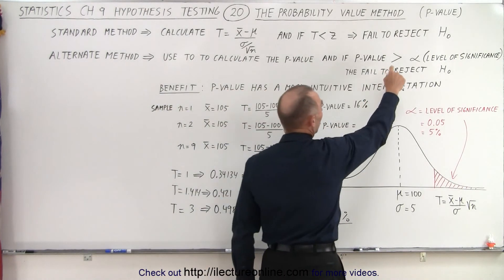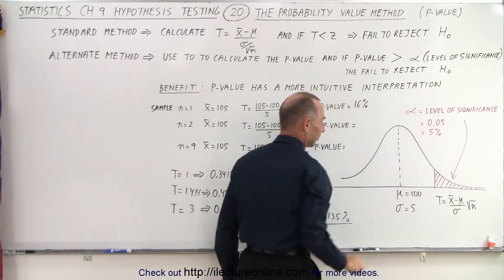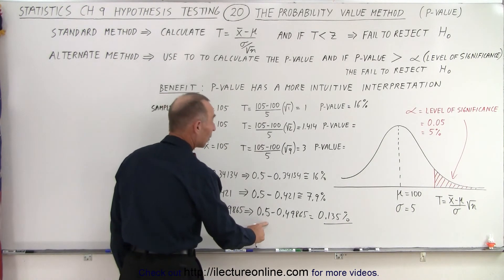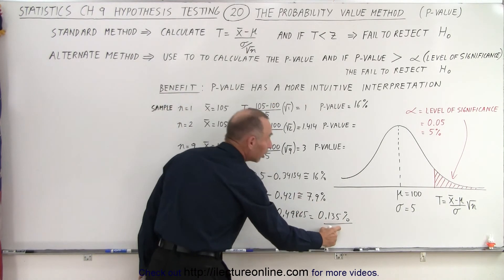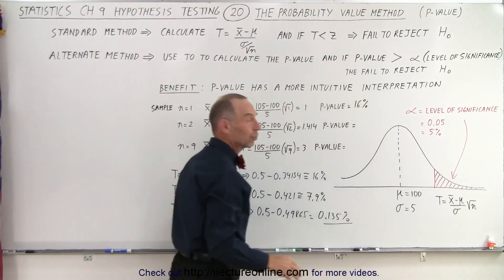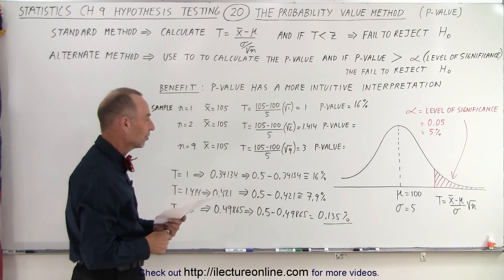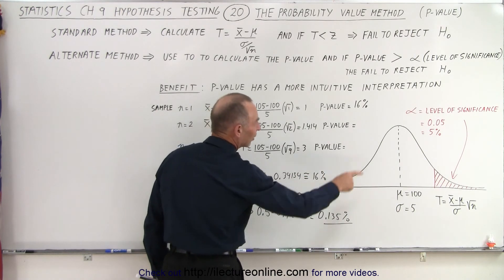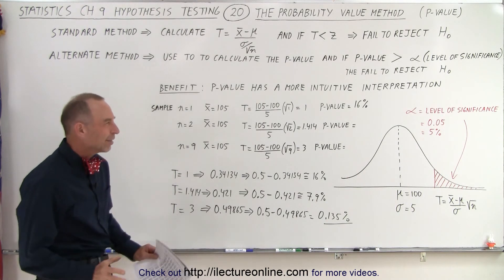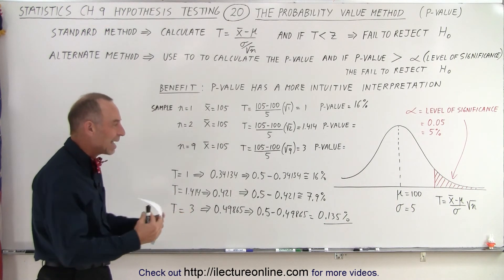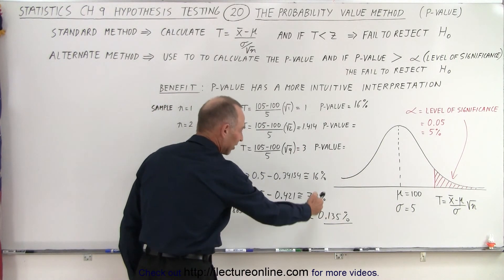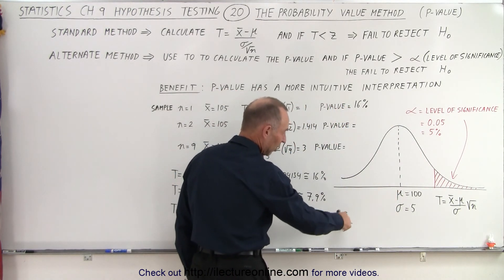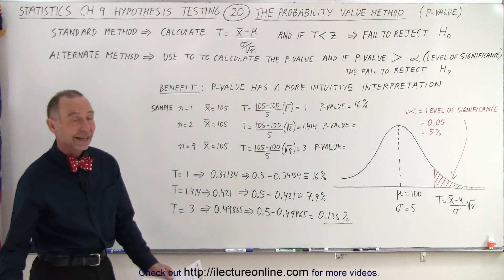Notice that the p-value is no longer greater than alpha — it's now smaller than the level of significance. Therefore we will reject the null hypothesis, because a t-value of 3 gives us a probability value that is really small compared to the level of significance, which pushes us into the critical region. So: fail to reject, fail to reject, reject — because we're comparing the probability value with the level of significance. This method is popular because it gives you a better intuitive feeling: you're comparing the probability value with the level of significance, and if it's smaller, we reject the null hypothesis. And that is how it's done.